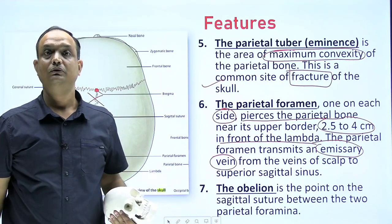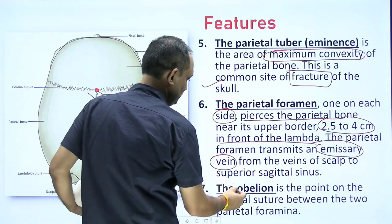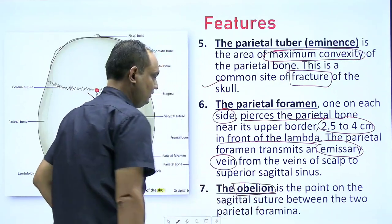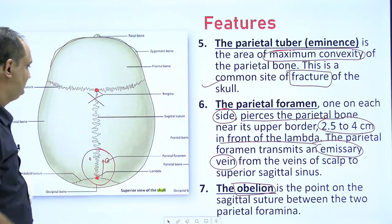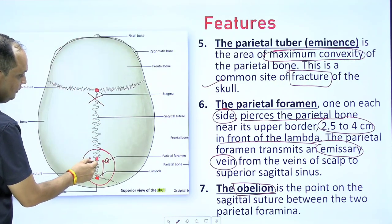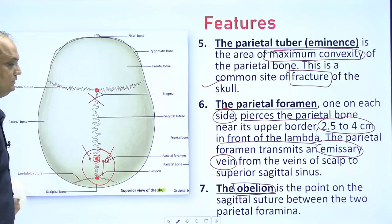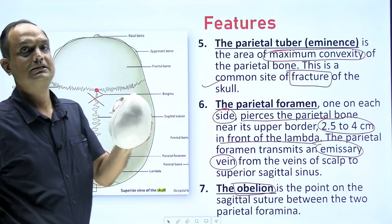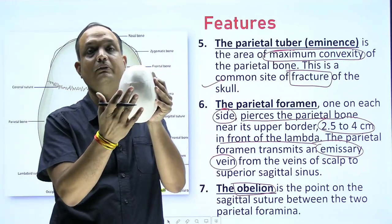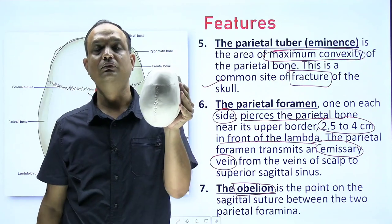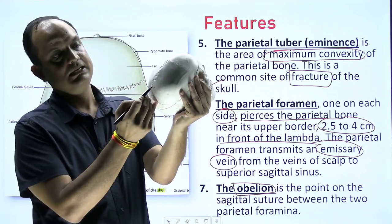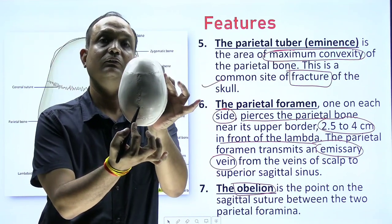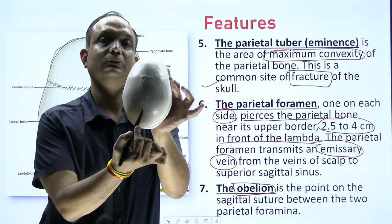There is one more feature known as obelion. What is obelion? Obelion is the point on the sagittal suture between the two parietal foramina. So if someone asks where is the obelion, you look for the parietal foramina, and just next to them on the sagittal suture, that point is known as obelion.